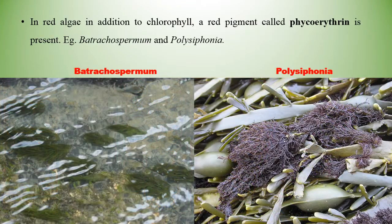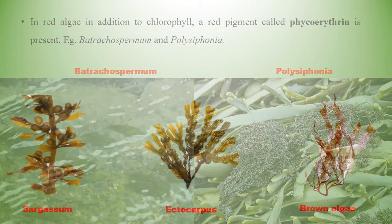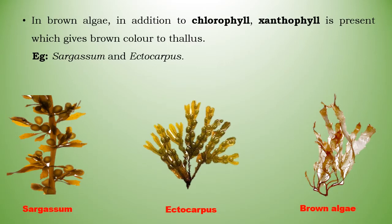In red algae, in addition to chlorophyll, a red pigment called phycoerythrin is present. In brown algae, a pigment called fucoxanthin gives a brown colour to the thallus. Examples of brown algae include Sargassum and Ectocarpus.